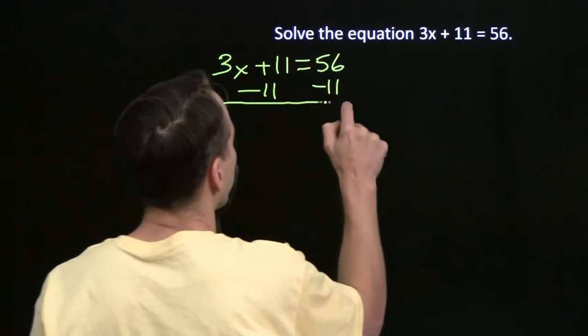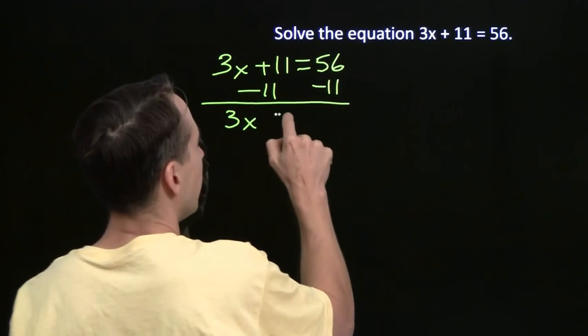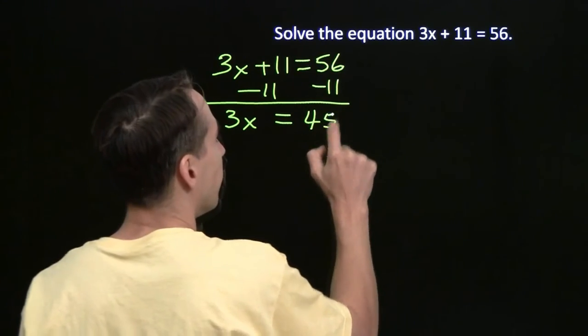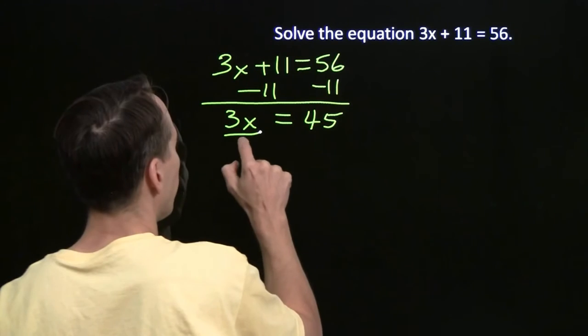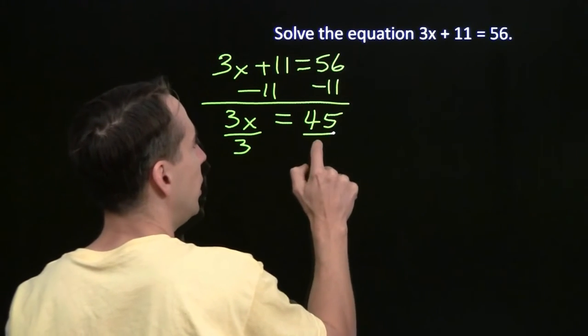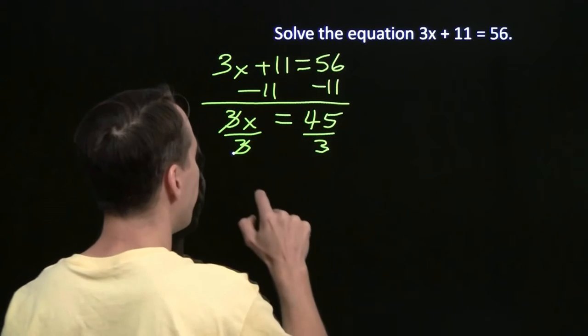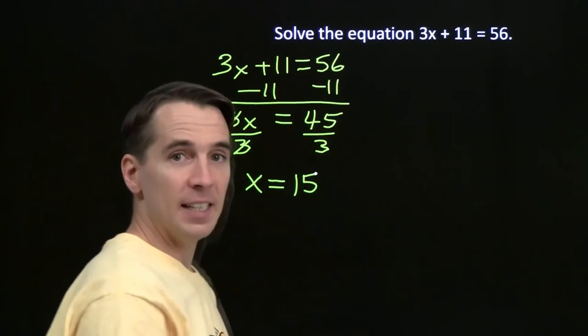And we get, well, the 11's canceled, so we get 3x on the left. Then 56 minus 11, that gives us 45. And now we've turned this into an equation we know how to solve. We just made this a much easier equation to deal with. We divide by 3 to get the x by itself. These cancel. 45 divided by 3. That gives us x equals 15.